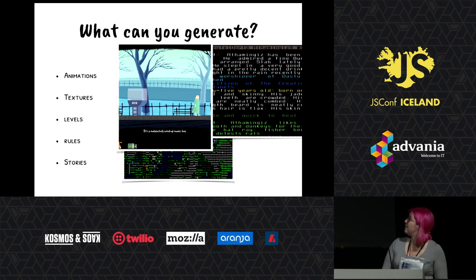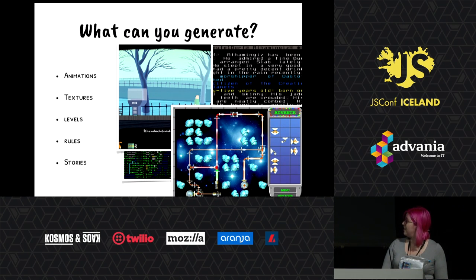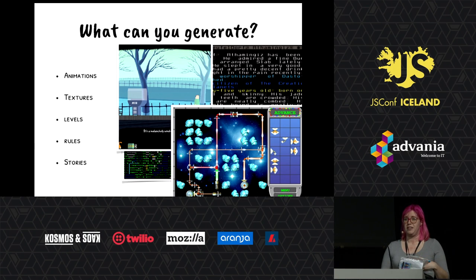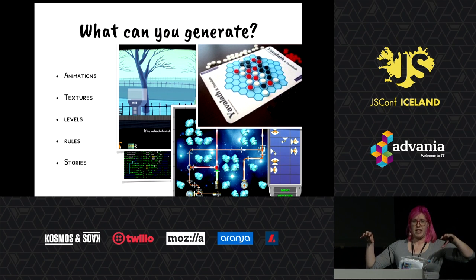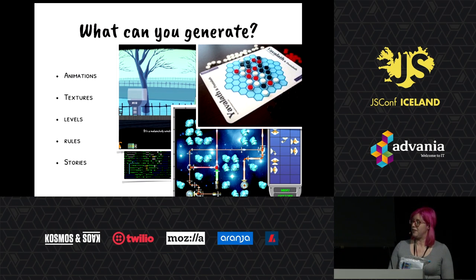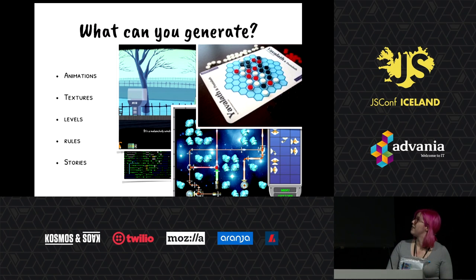You can even generate game rules. There's a work out of NYU that generates an adventure game dynamically. There's a project called Refraction that uses procedural generation not just to design levels, but to verify that the levels are unbreakable by players. And you can design games themselves — this is Yavalath, a genetic algorithm that could design systems of rules, kind of like Go. It generated thousands of games, generated players for them, had the players play the games, and picked the ones where players made the most interesting decisions. They produced that game, gave it a generated name, and sell it in stores.